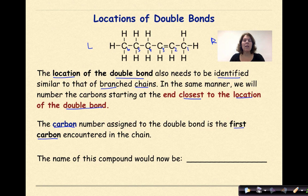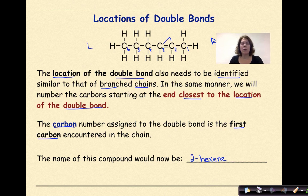We know that the ending is going to be ENE, but the double bond is between carbons 2 and 3. So when I write this, I'm going to put 2-hexene. That 2 indicates that the double bond is starting at carbon 2 and going to carbon 3.